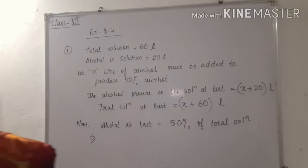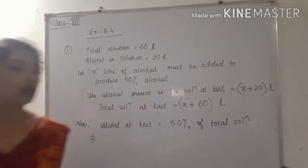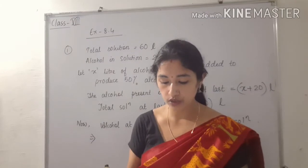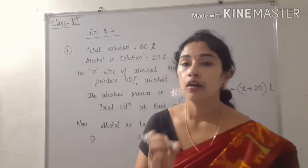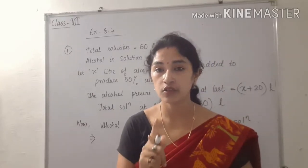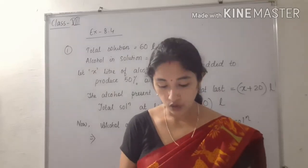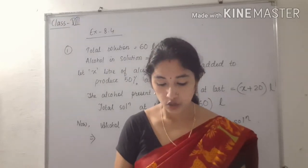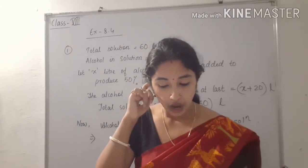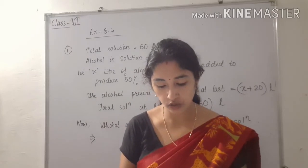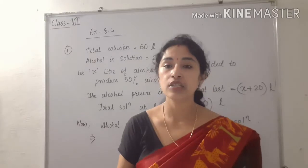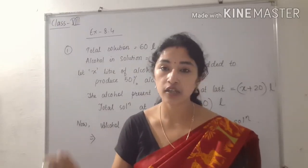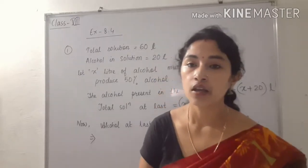Let us start with question 1. A 60-litre solution of alcohol and water is given, meaning the solution contains two things: alcohol and water. It contains 20 litres of alcohol. We need to find how much alcohol must be added to produce a solution of 50% alcohol. So how much alcohol must be added to that solution so that we get a solution which contains 50% alcohol?